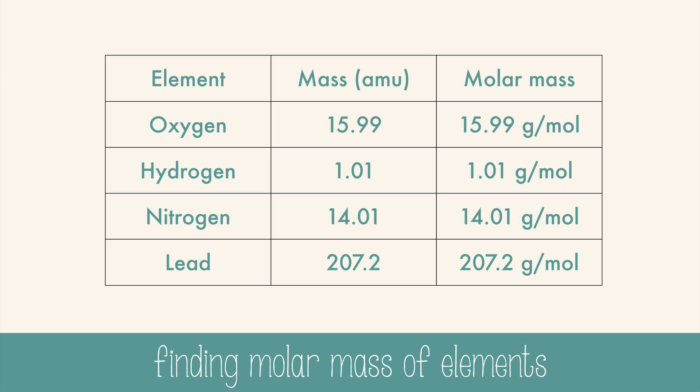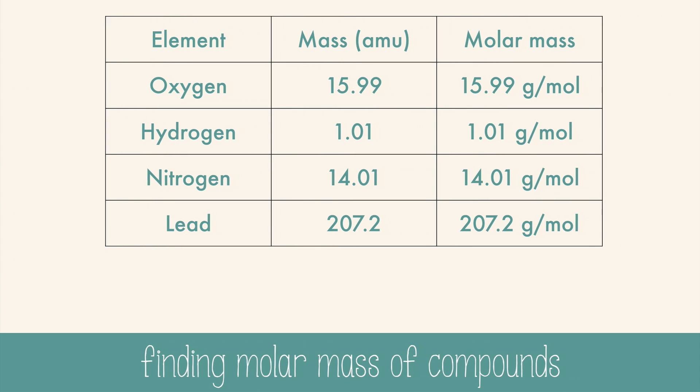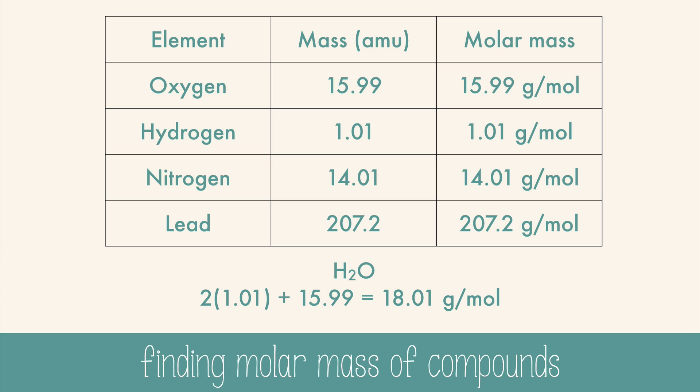The same is true for any element on the periodic table. If you want to figure out the molar mass for a compound, just add together the masses for each atom in the compound. For example, water has the formula H2O, so we would add two hydrogen masses and one oxygen mass together, and we get 18.01 grams per mole. You can do this with any compound.